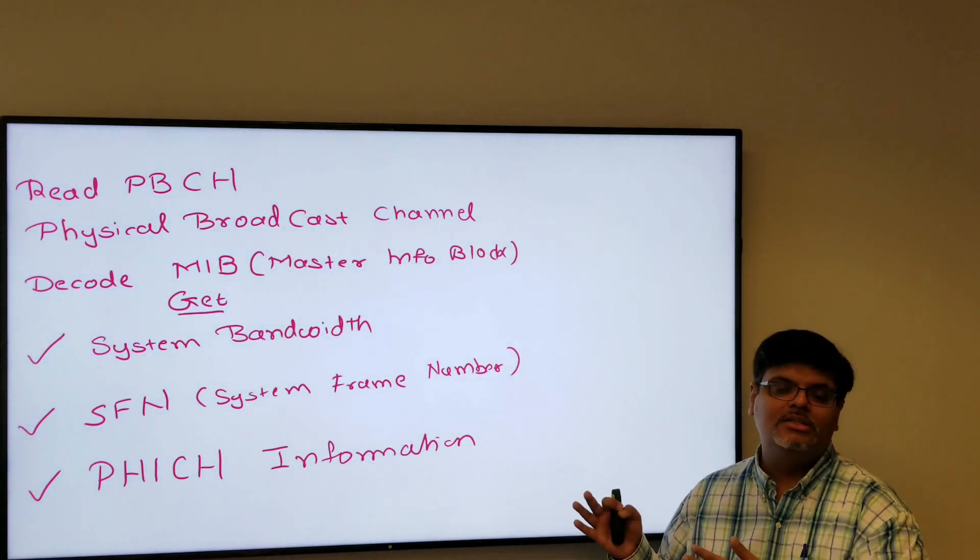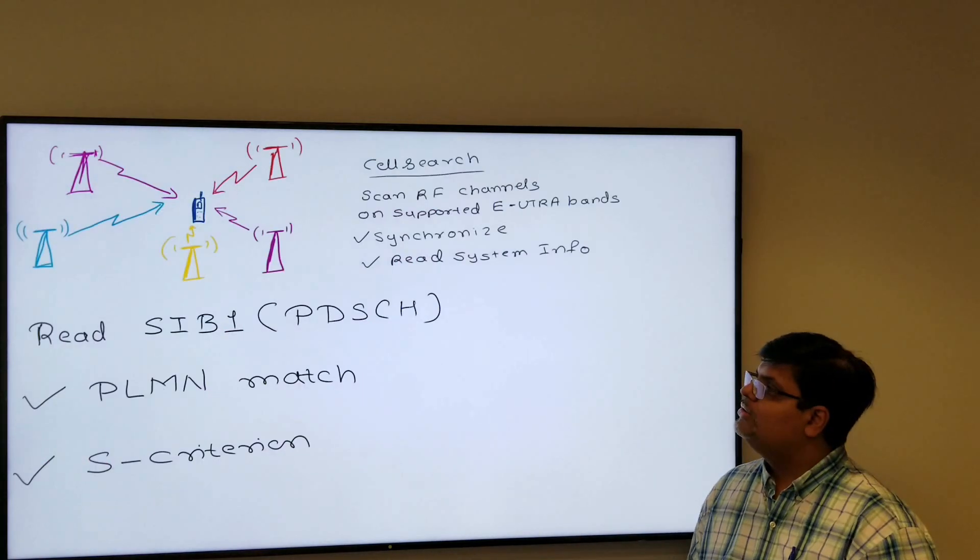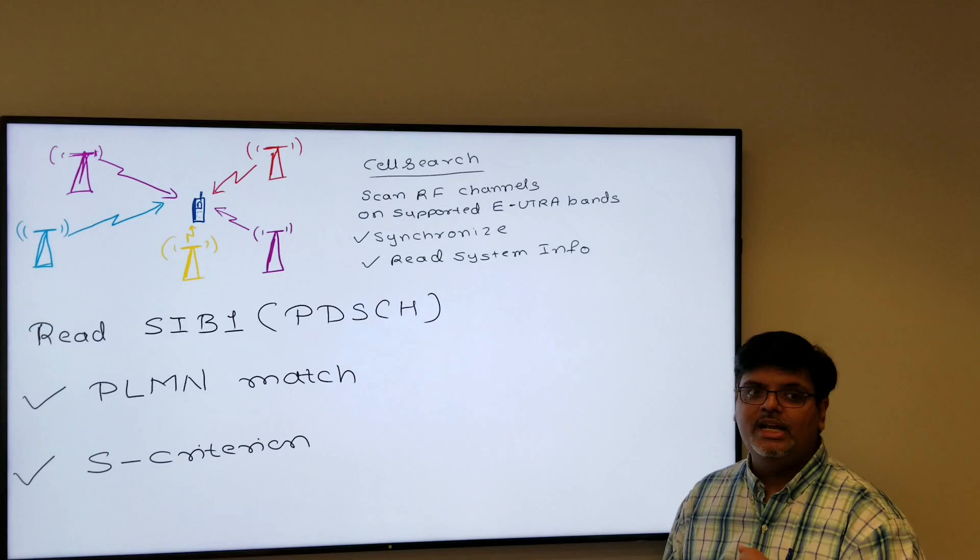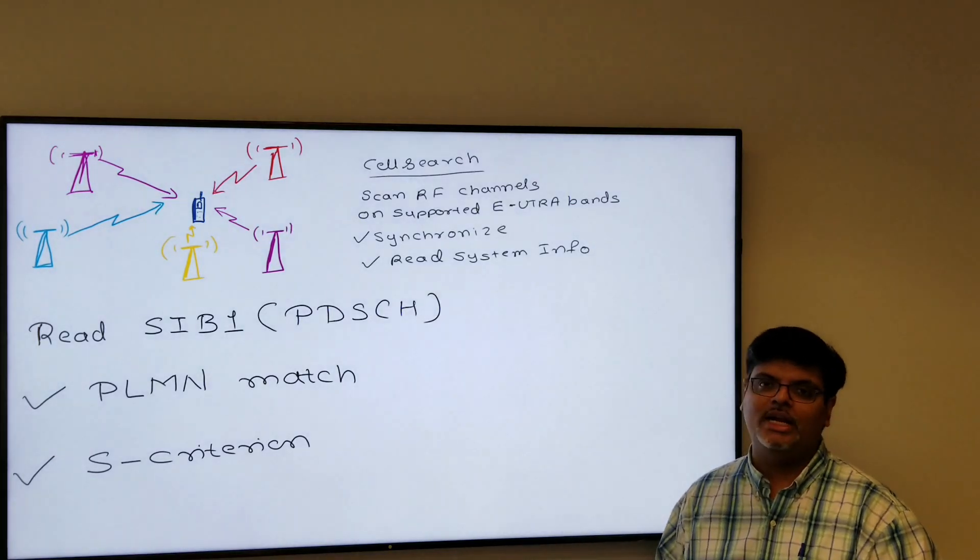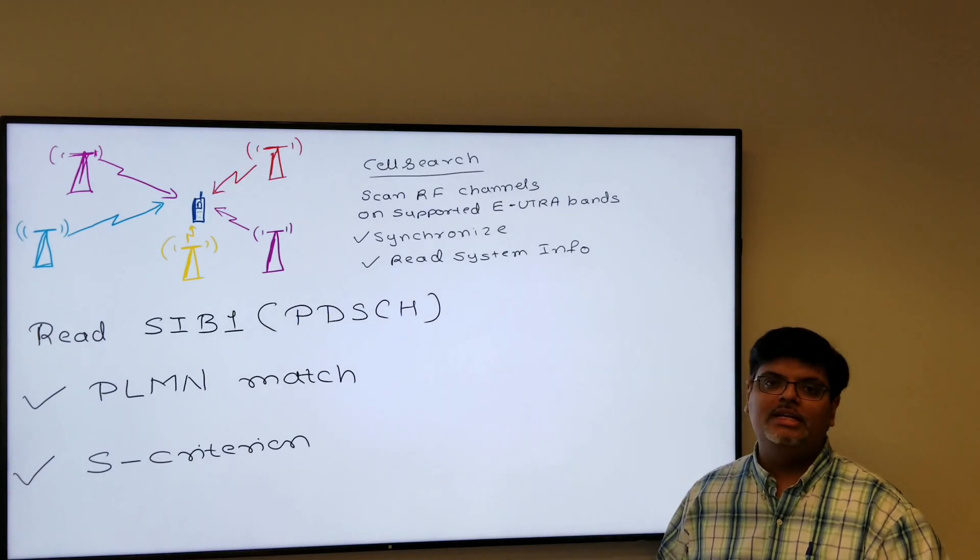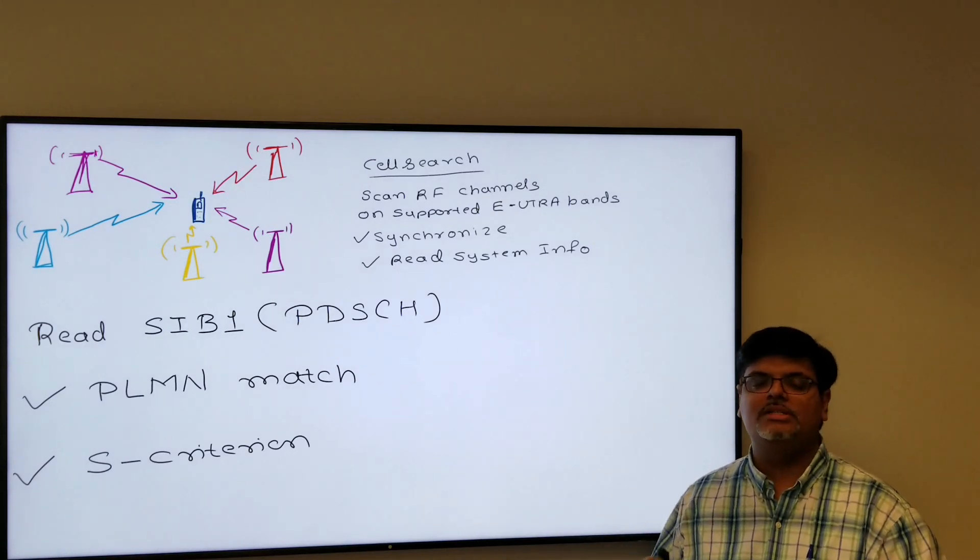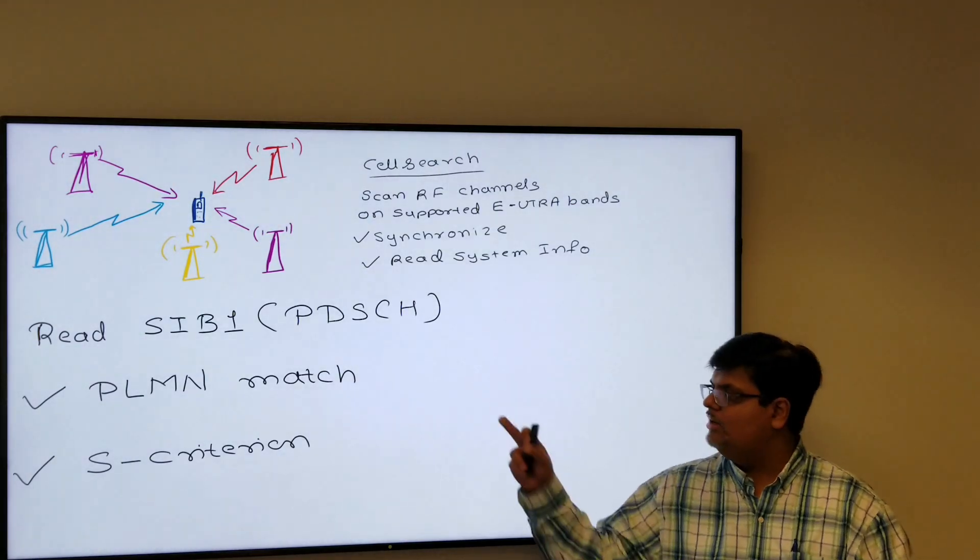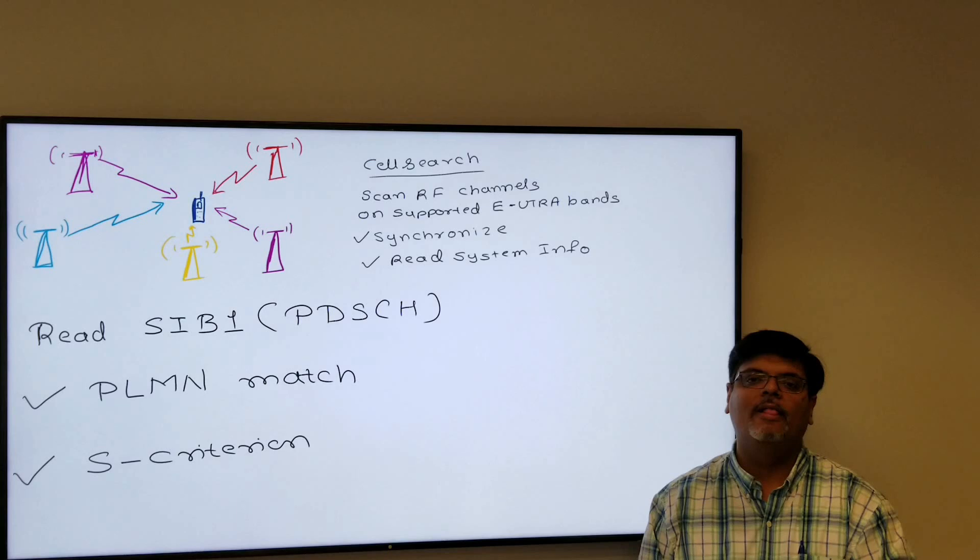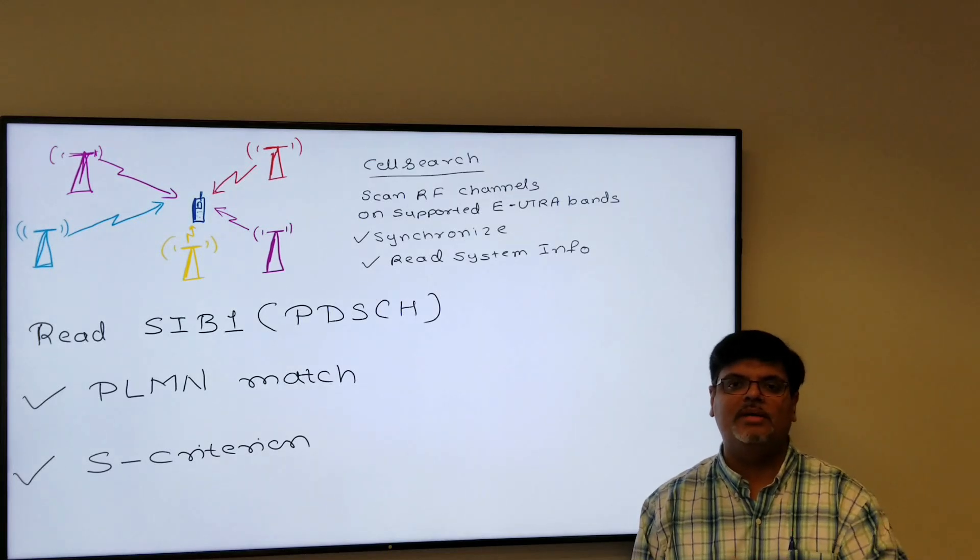Now after getting the MIB, it goes and reads PDSCH which is your physical downlink shared channel, from which it reads the SIB1 which is system information block 1. Now the most important information carried in SIB1 is your PLMN. What is PLMN? It's your MCC and MNC, the mobile country code and mobile network code. Each network has its own unique mobile network code.